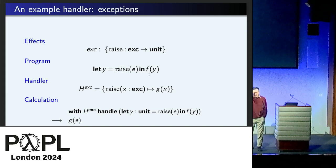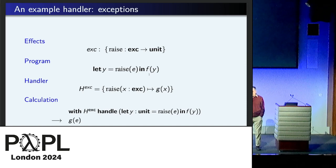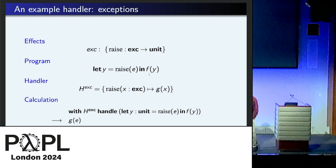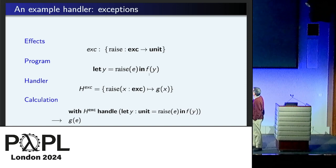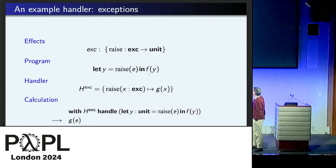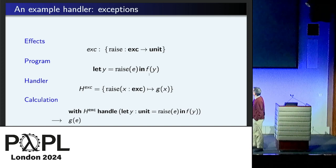They're just kind of fancy exception handlers, although unlike exception handlers, you can return to where the operation, like calling exception or whatever, was raised. So this is just a traditional one. They have an effect called exception. It's got one operation raised, which takes the exception and gives you nothing, because you're just finished. So here's a program. You raise the exception, and then you call F. That's obviously not very good. You're never going to get to F.